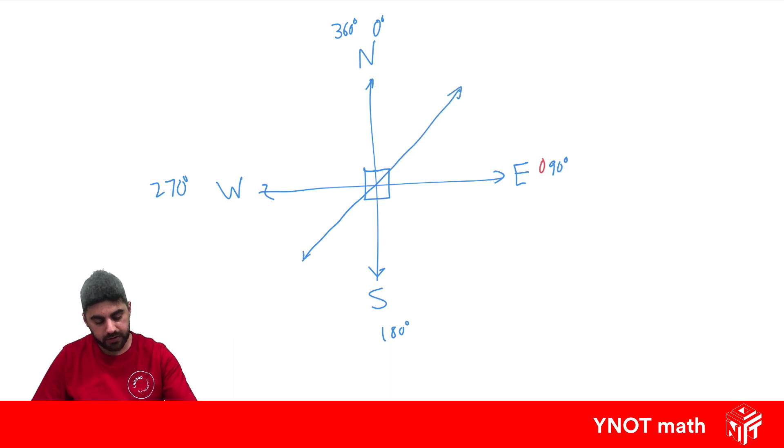In the middle of all these, we have more directions. This one is northeast at 045 degrees. This one is southeast at 135 degrees. This one's southwest at 225 degrees, because each one of these is split exactly in half at a 45 degree angle.